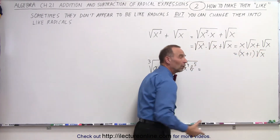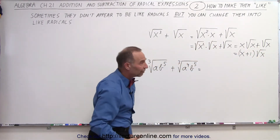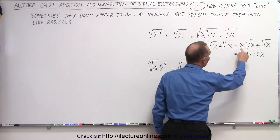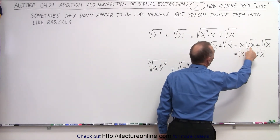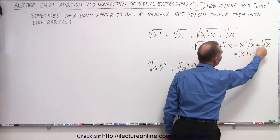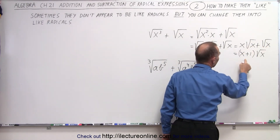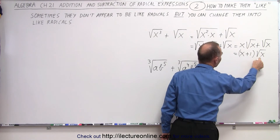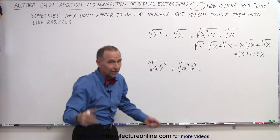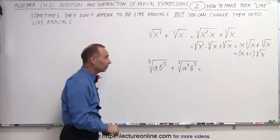So that's essentially what we have. We can also say we have x of the square root of x plus one of them. When we add them together, it's x plus 1 times the square root of x. Either way, you get the same result.